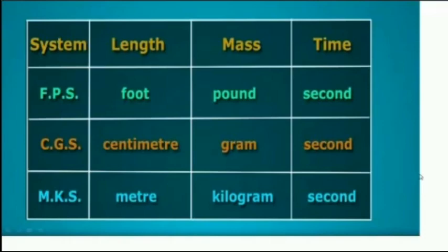In the previous lecture, we studied the system of units. In the CGS system, length is in centimeter, mass in gram, and time in second. In the MKS system, length is in meter, mass in kilogram, and time in second.